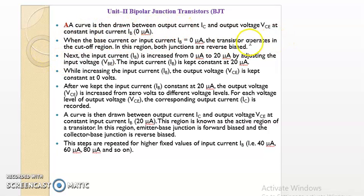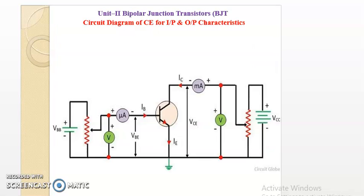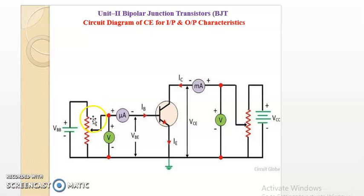When the base current is zero, the transistor operates in the cutoff region. In this region, both junctions — the emitter diode and collector diode — are reverse biased. The input current IB is increased from 0 to 20 microamperes by adjusting the input voltage VBE. As shown in the figure, VBE can be varied using a potentiometer or rheostat.